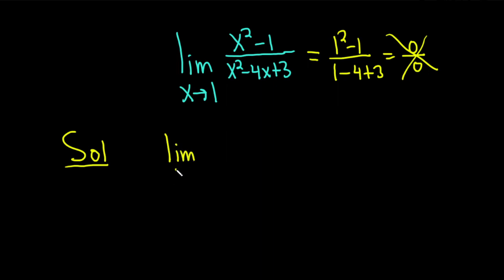We've got the limit as x approaches 1. In the numerator we have x squared minus 1, that's the difference of squares. We can write that as (x minus 1) times (x plus 1). All of this is being divided by, here we have x squared minus 4x plus 3. This also factors.